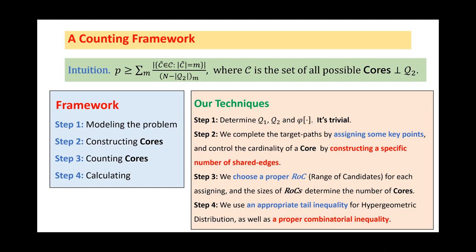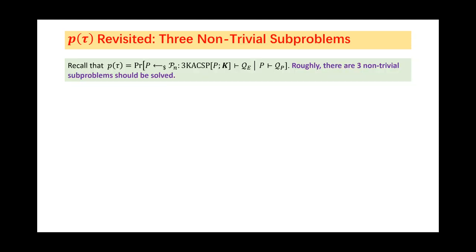In the next step, we should count how many cores can be constructed in step 2. During the proof, we choose the proper ROC for each assignee, and the sizes of ROCs determine the number of cores. Roughly, ROC is a set of elements which are suitable for this assignee. At last, we should calculate a summation. During the calculation, we will use a tail inequality as well as a combinatorial inequality. We have said that P(τ) can be reduced to this type of problems.